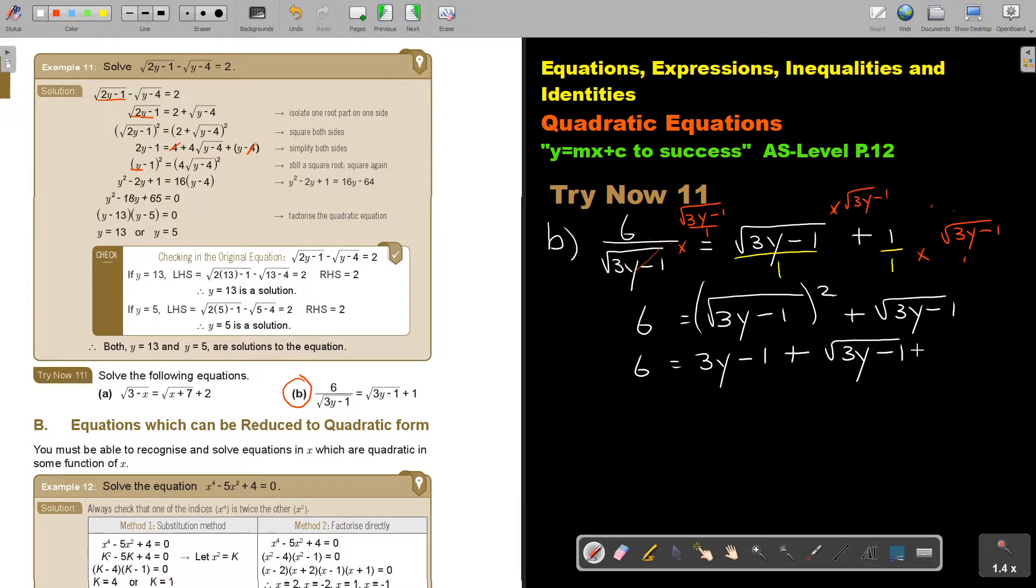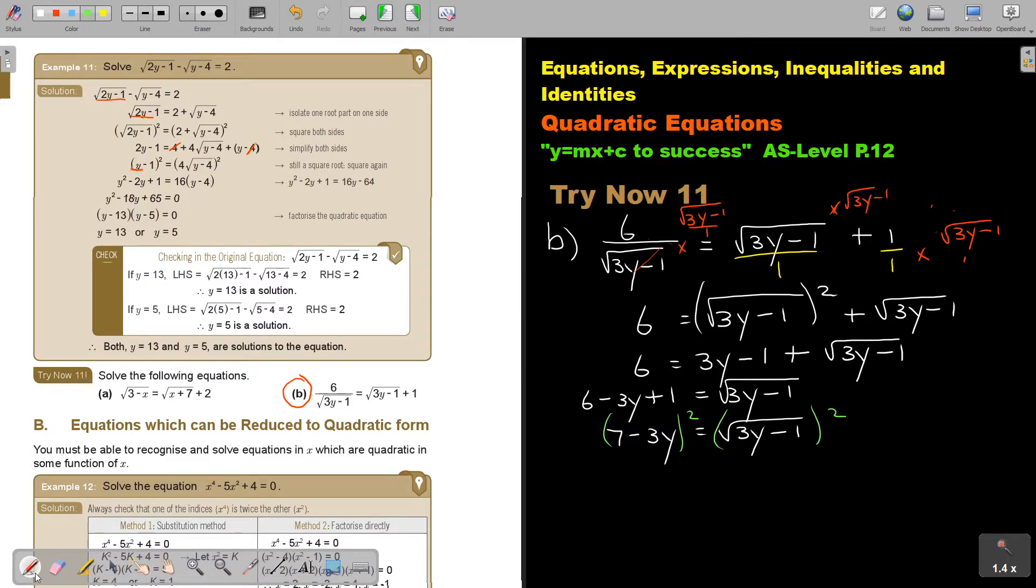Now again, I have a root and I don't like it. So I will square again. But I first have to isolate. I leave it on this side. Why do I leave it on this side? Because it's positive. If it was negative, I would take it over. I always try to find the easiest route. So this I take over. I'm going to have 6 minus 3Y plus 1 is equal to square root 3Y minus 1. If I simplify this, I'm going to get 7 minus 3Y and that is square root 3Y minus 1.